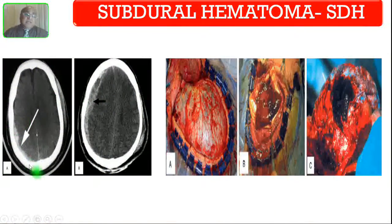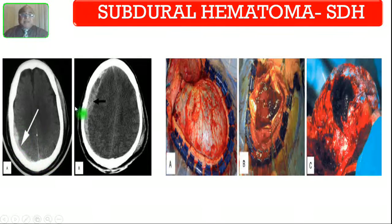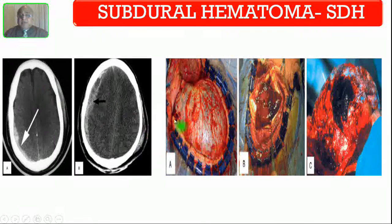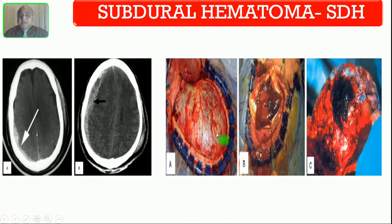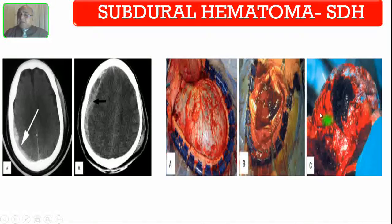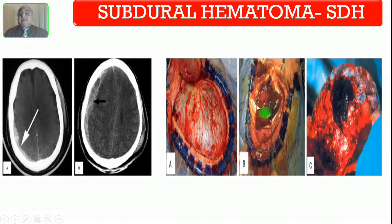Here you are seeing a subdural hematoma — this is the crescent appearance on CT scan, and it crosses the suture line. After craniotomy, you are seeing the dura is intact with blood clot inside the dura mater. You have to incise the dura and evacuate the blood collection inside, removing all the blood clot from inside the dura mater.